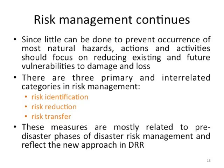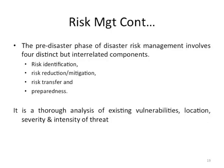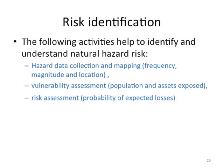The pre-disaster phases of disaster risk management involve four distinct but interrelated components: risk identification, risk reduction or mitigation, risk transfer, and preparedness. Risk identification is a thorough analysis of existing vulnerabilities, location, severity, and intensity of threat. Activities to identify and understand natural hazard risk include hazard data collection and mapping — regarding frequency, magnitude, and location — vulnerability assessment of population and assets exposed, and risk assessment of the probability of expected losses.